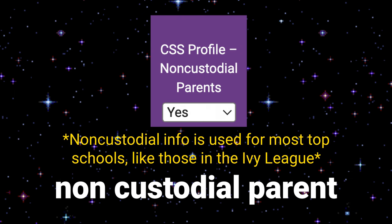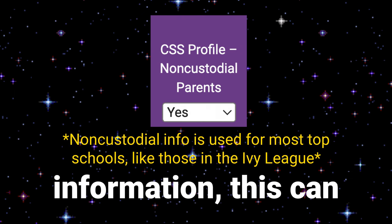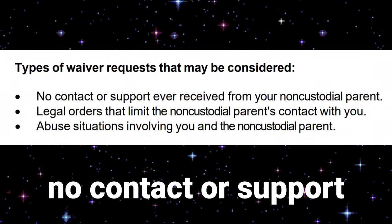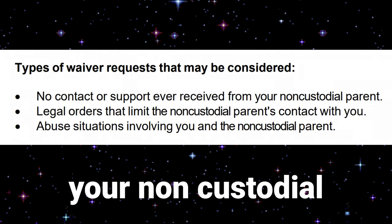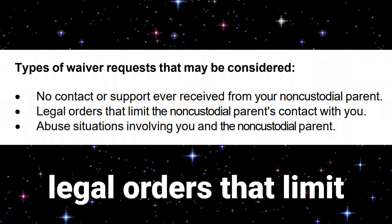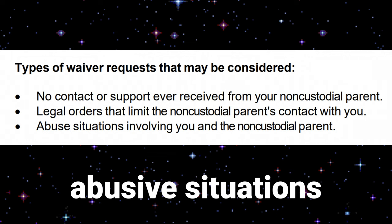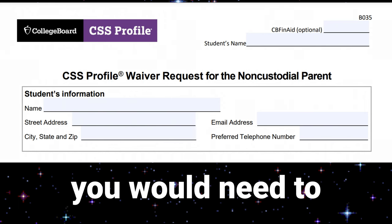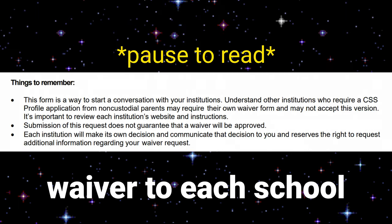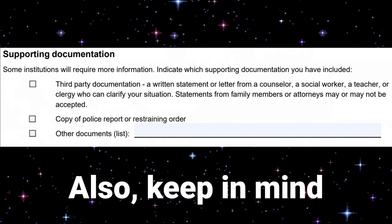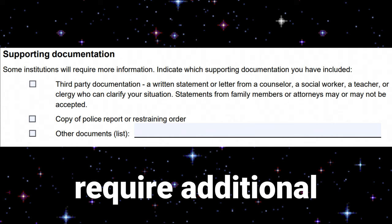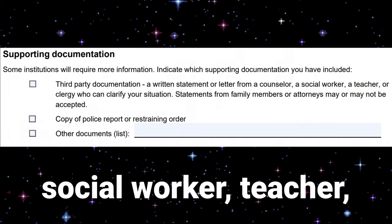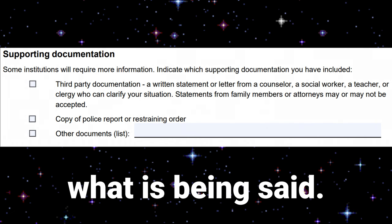If you are applying to a school that requires a non-custodial parent to submit information, this can potentially be waived. Waiver requests may be considered if you have had no contact or support from your non-custodial parent, if there are legal orders limiting that parent's contact with you, or if there are abusive situations involved. You would need to fill out a waiver form and submit it to each school. Some schools may also require third-party documentation from a counselor, social worker, or teacher to verify the circumstances.